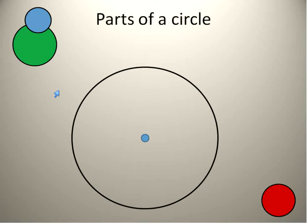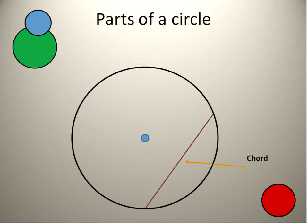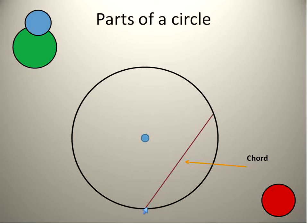Now, what we're going to do next is to talk about the parts of a circle. The first part I want to talk about is a chord. A chord is any line that goes from the edge of the circle to the edge of the circle. You'll see this example of a chord does not go through the center. It can be on any side, all the way around. It can be short or long. As long as it's touching two points of the circle, it's called a chord.